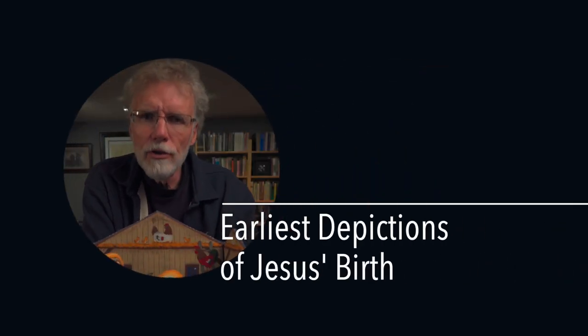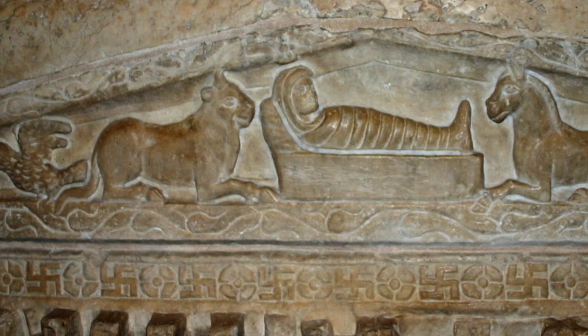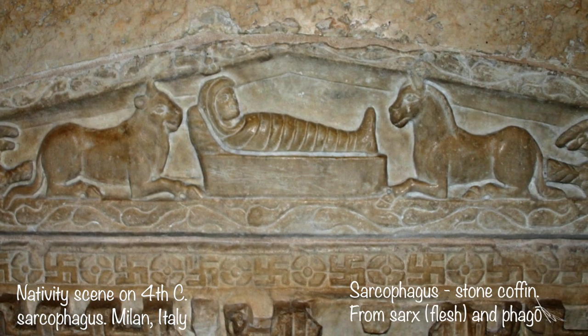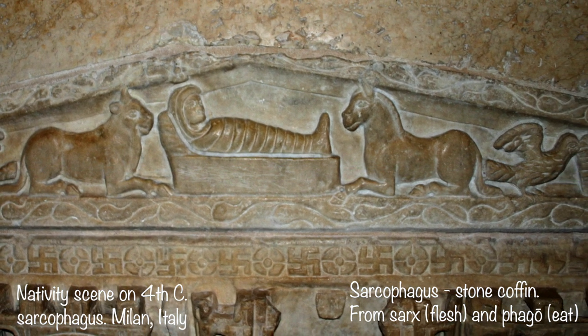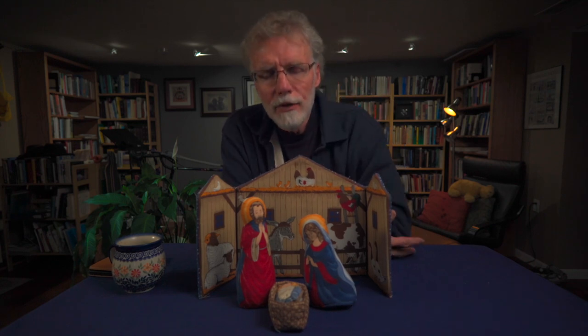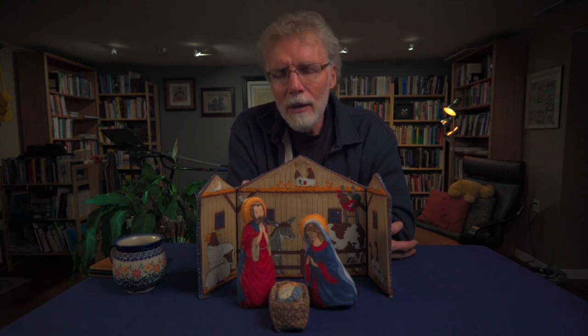The earliest depictions of Jesus' birth are really simple compared to the later depictions and the ones that we have today. Perhaps the simplest is just Jesus, or Jesus and his parents. This carved image on a sarcophagus or coffin in Milan from around 350 AD just has Jesus in his manger with farm animals on either side. The shepherds or the magi arriving to visit Jesus is another very early development. The farm animals, the shepherds, or the magi all hew very closely to the biblical accounts found in Matthew and Luke. Neither Mark nor John contain narratives about Jesus' birth.